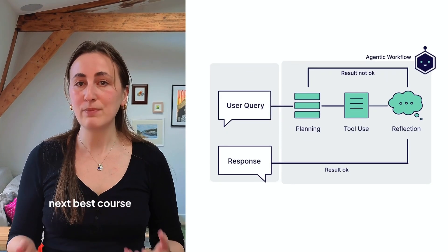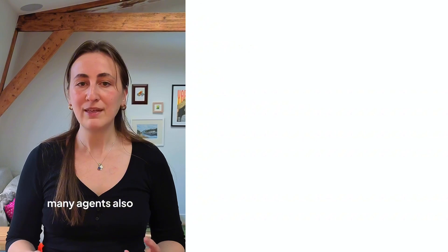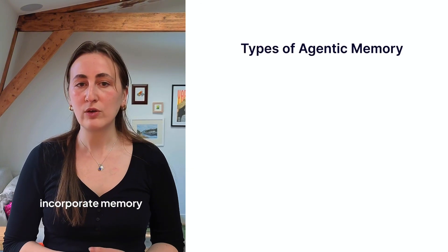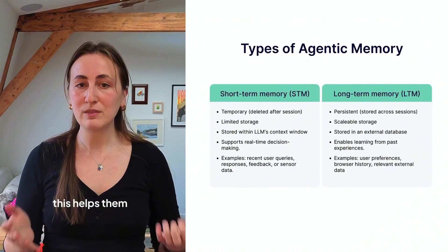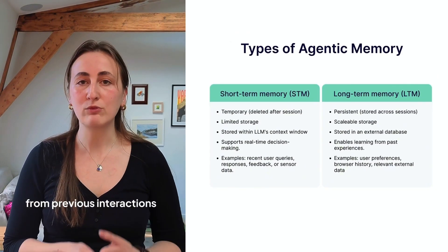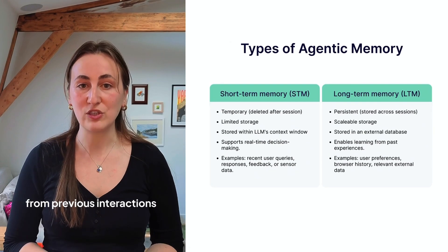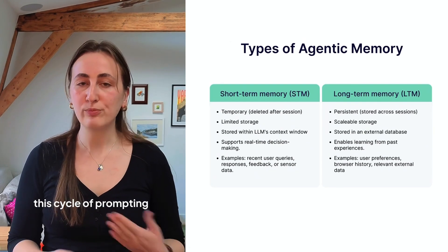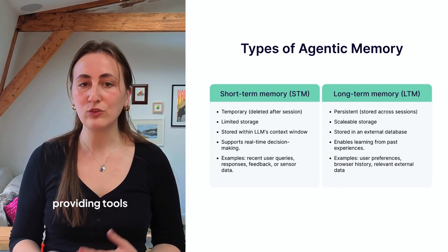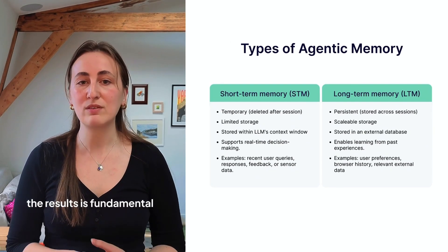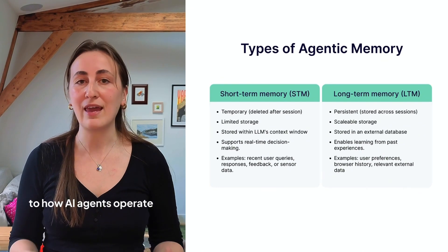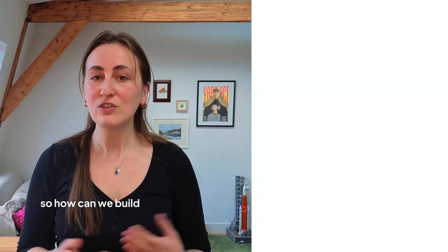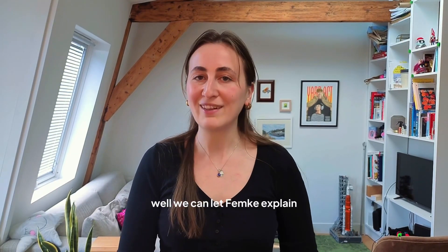The LLM observes the response from the tool and uses that information to either formulate the final answer or decide on the next best course of action. Many agents also incorporate memory — short or long-term — to help them retain context from previous interactions. This cycle of prompting, providing and using tools, and observing the results is fundamental to how AI agents operate.